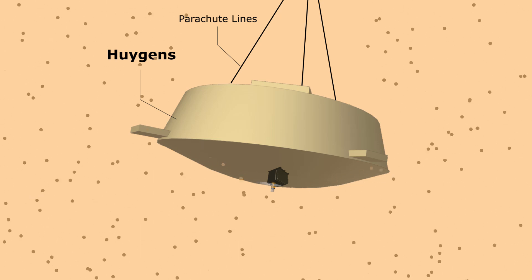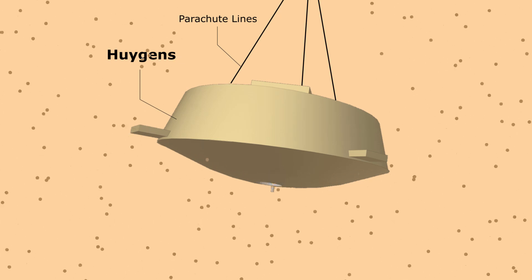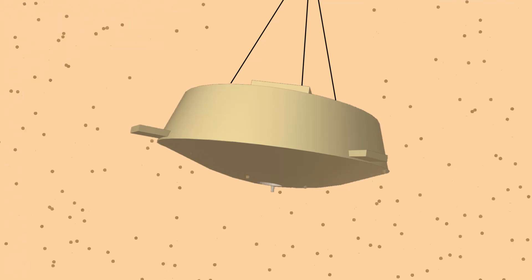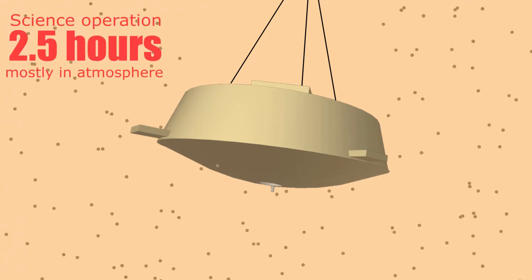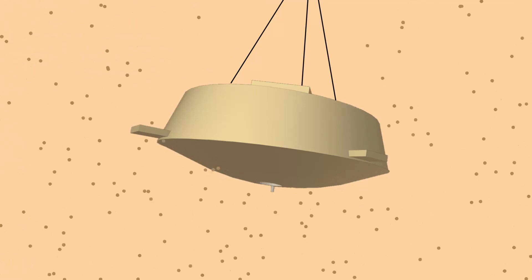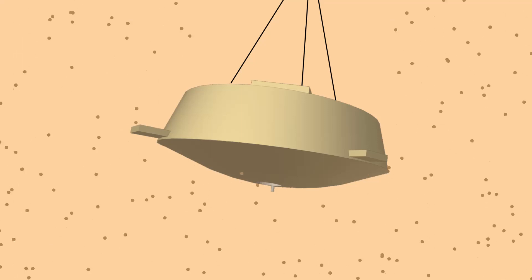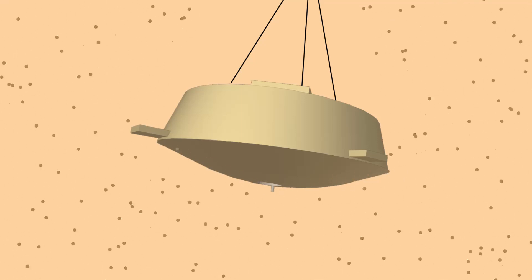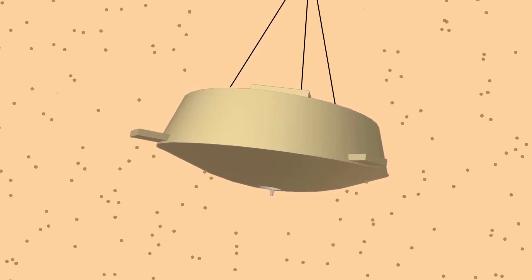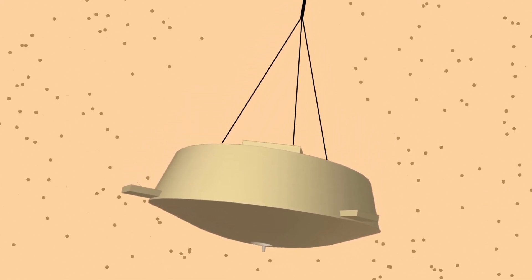It samples the air as the probe descends to the atmosphere. Given that Huygens can only perform 2.5 hours of science because of limited battery, and over 83% of that time will be spent falling through the atmosphere, learning as much as possible about these organics is crucial to the success of the mission and the understanding of Titan. As a matter of fact, Huygens is classified as an atmospheric probe.